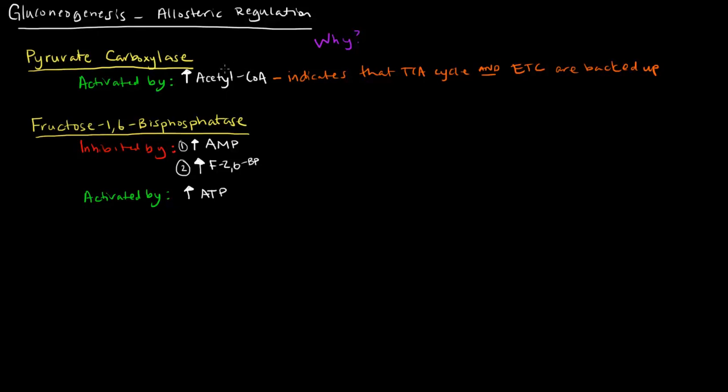So in this case, we want to just go ahead and take those pyruvates and instead of turning them into acetyl-CoA, we just go backwards and convert them into glucose. So we activate the process of gluconeogenesis.